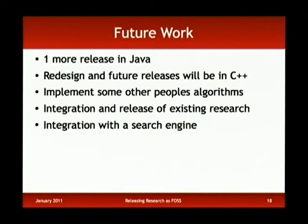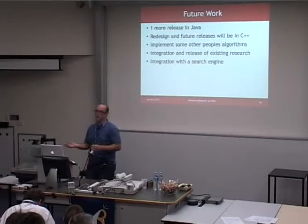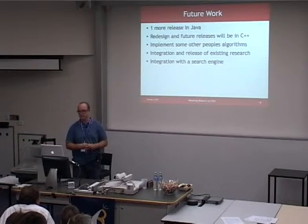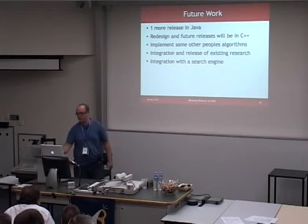For future work, we're going to do another release in Java and a future release in C++. I know C++ is not the nicest language but it's useful for what we want to do — we can expose it with a C interface so it's easy to bind to your favorite scripting languages. I want to implement other people's algorithms to make a whole toolkit, making it easy to do a comparison of different approaches. I also want to integrate all of my existing research that I haven't put into the package yet, and integrate it with a search engine so it has an actual use rather than just being a machine learning algorithm by itself.